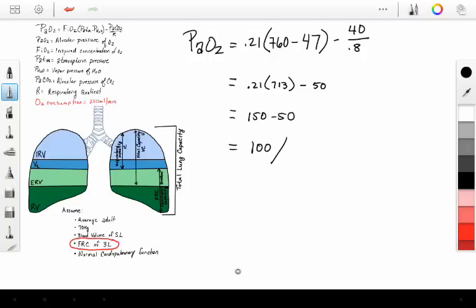Now, what is that percent of oxygen? Well, all we have to do is take the oxygen tension divided by atmospheric pressure, and that's going to give us roughly 13%.